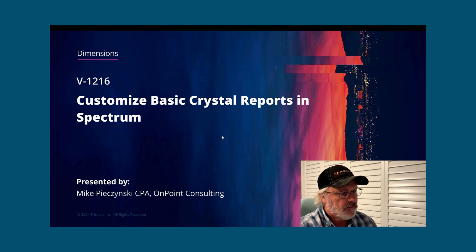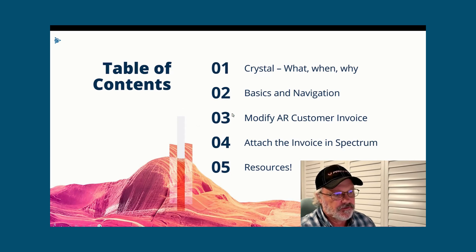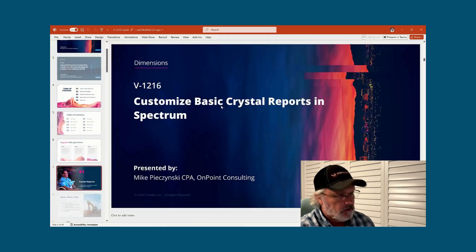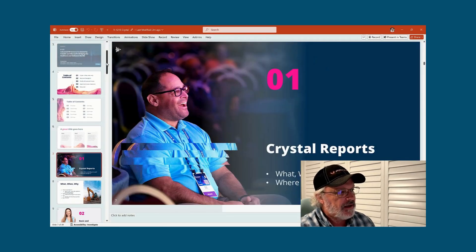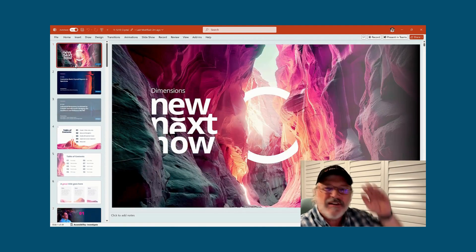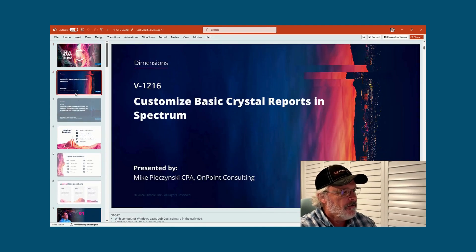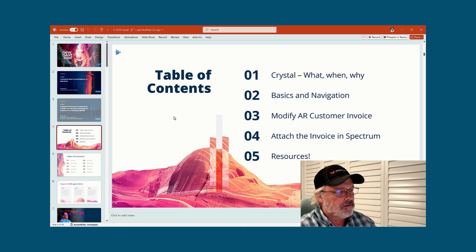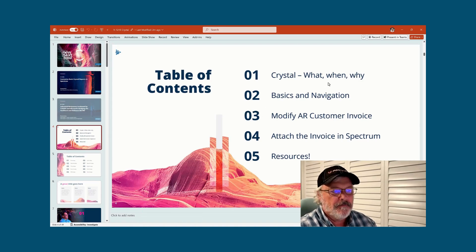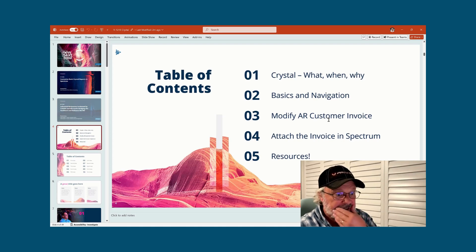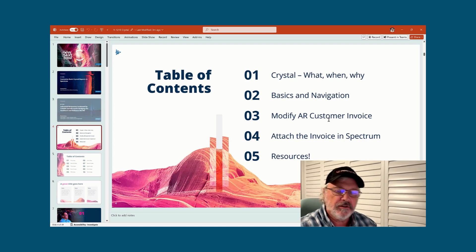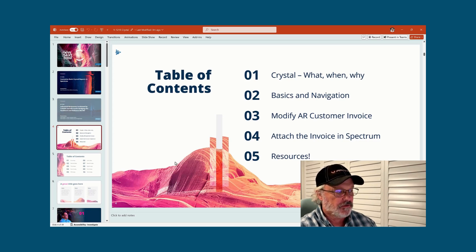Let's get rid of the PowerPoint. I'm going to be following along in the PowerPoint, so I'll be flipping back and forth so that this follows the same structure that the presentation did. The quick table of contents: we'll talk about what, when, why on Crystal — what is it. We'll do basic navigation. We're going to modify a customer invoice in Spectrum, then attach that modified version to the Spectrum software, and talk about resources for you to move forward.